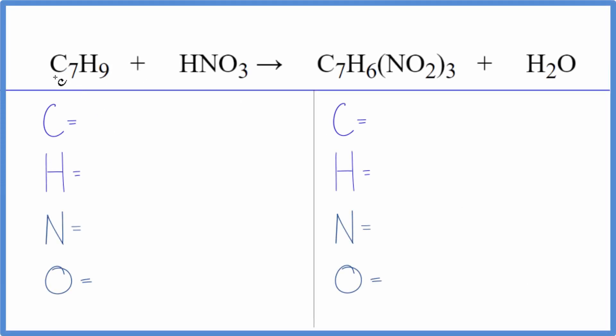To balance this equation, we have C7H9 plus HNO3, this is a hydrocarbon plus nitric acid. Let's count the atoms up, and that's really the key to balancing this equation, is correctly counting the atoms up.